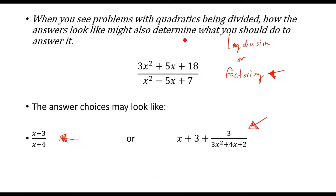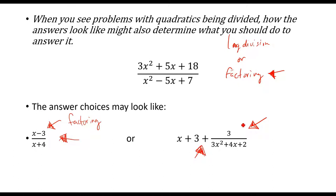Based on the answer choices, you might get an idea of which method to use. If you already started on your homework, you should recognize what these answers look like and what you should be doing. If you did your long division homework, you should know how to get to that type of answer. If you're watching this before doing homework: answers that look like simple fractions probably mean factoring, while answers with a quotient and remainder probably mean long division.